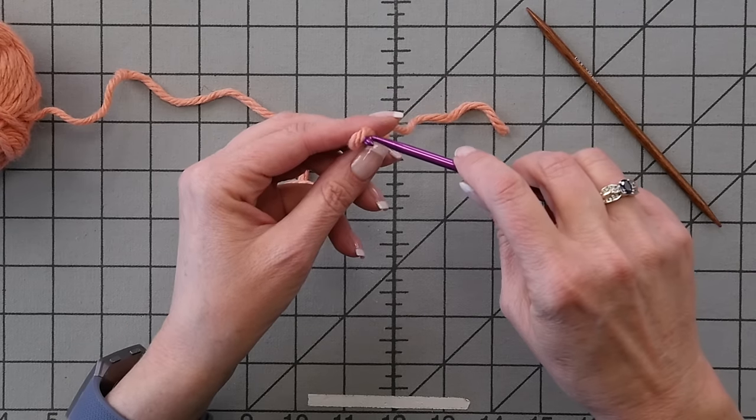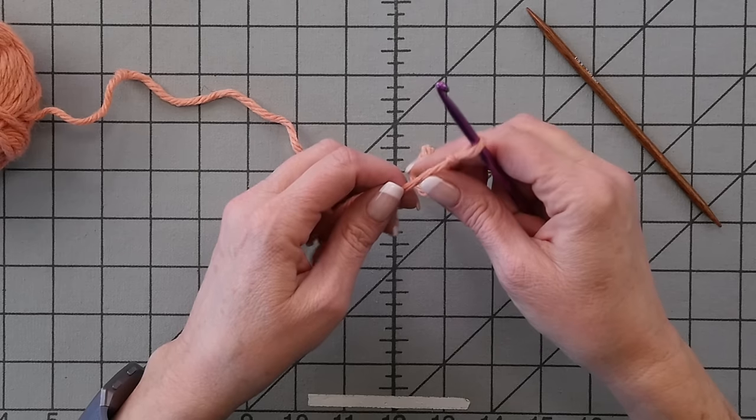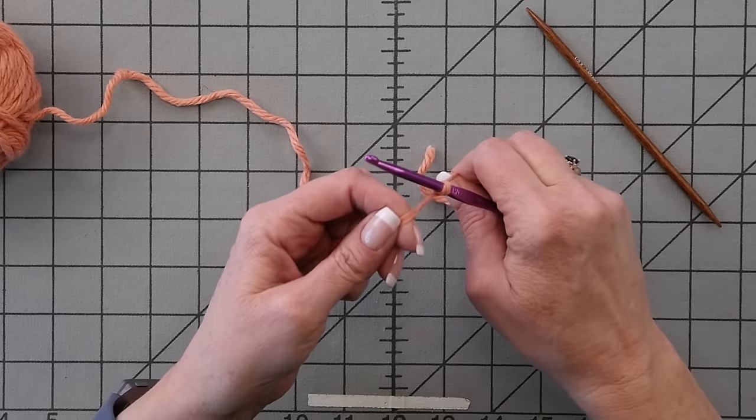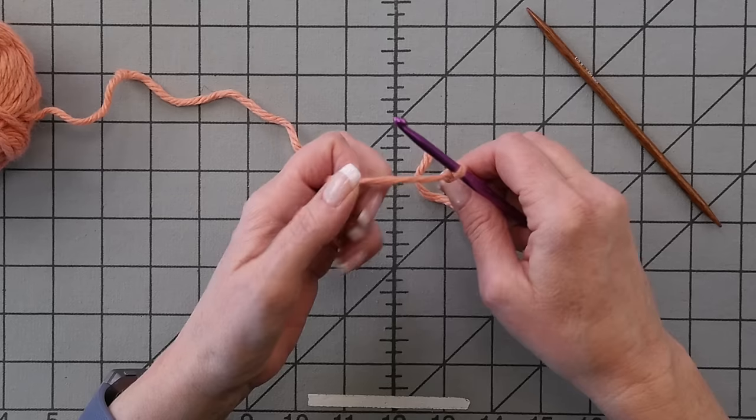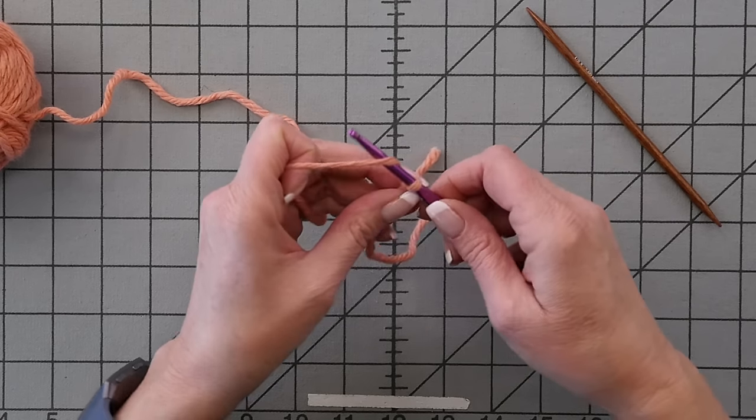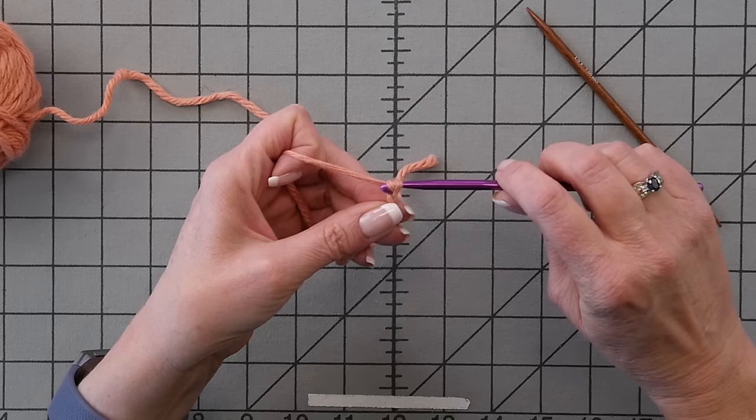And I'm going to take the crochet hook and just chain a few stitches. You don't really have to know how to crochet to do this. You'll see that I'm just going to grab the yarn and pull it through the loop on the hook a few times, just to get us started.